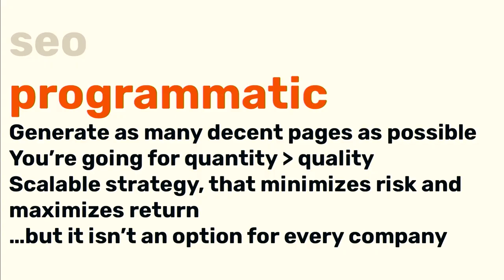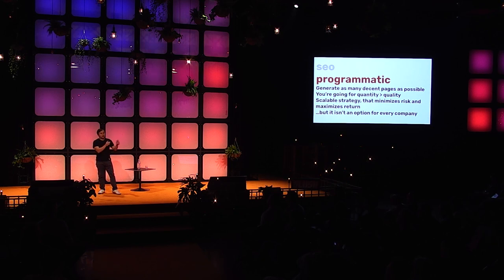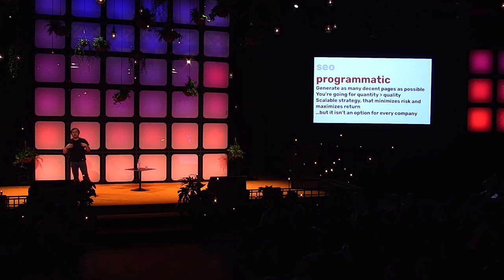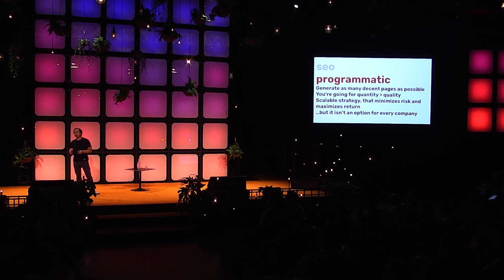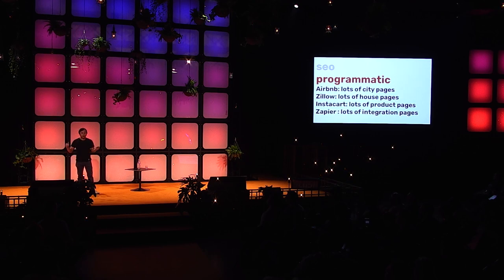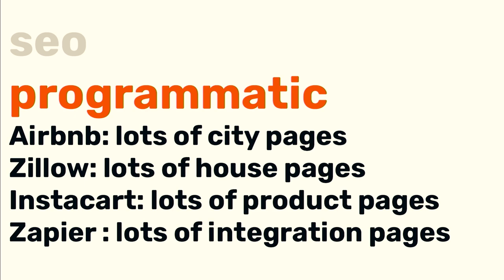Programmatic basically means generate as many decent pages as possible. They don't have to be great — you're optimizing for quantity over quality because you're trying to generate as many pages as possible for as many keywords as possible. It's a very scalable strategy that minimizes investment risk. Airbnb has city pages like 'places to stay in San Francisco,' Zillow has lots of house pages, Instacart has product pages, Zapier has integration pages. I worked with a company called Spot Angels that provides parking information. We created pages ranking for 'places to park near the Statue of Liberty,' 'near Golden Gate Park,' and in three months they went from 60 visitors a month to 100,000.